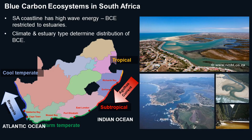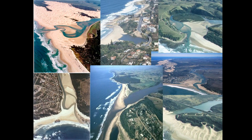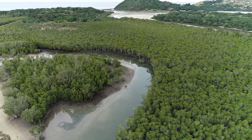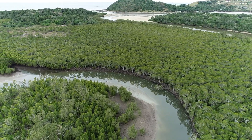In South Africa, blue carbon ecosystems occur in estuaries. Their distribution is determined by climate across the four biogeographic regions: the tropical, subtropical, warm-tempered and cool-tempered regions. Their distribution is also determined by estuary type. For example, the size of the floodplain determines available space for the ecosystem, and the inlet state as permanently open or temporarily closed influences tidal connectivity, which is especially important for mangroves.